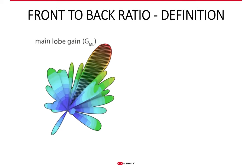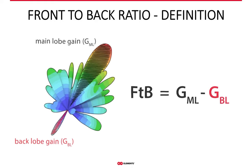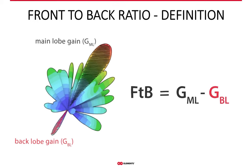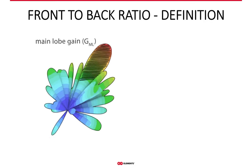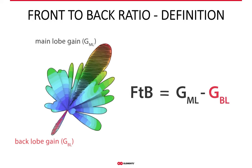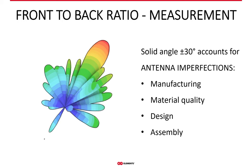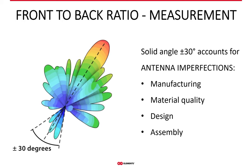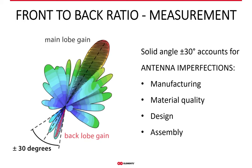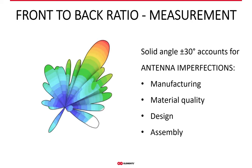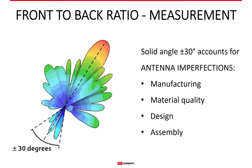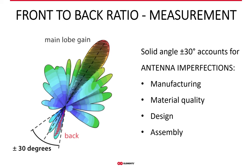The front-to-back ratio is very easy to understand. Looking at the radiation pattern in this example — we show the pattern of a directional patch array — the front-to-back ratio is the difference between the gain of the main lobe and the gain of the back lobe, which is pointing backwards. In practice, front-to-back ratio is often determined based on the strongest side lobe from a ±30 degree angle around the back lobe, because of possible manufacturing, assembly, or material imperfections. Because of these imperfections, the back lobe might not be a single lobe but can be divided into several minor lobes around that direction.